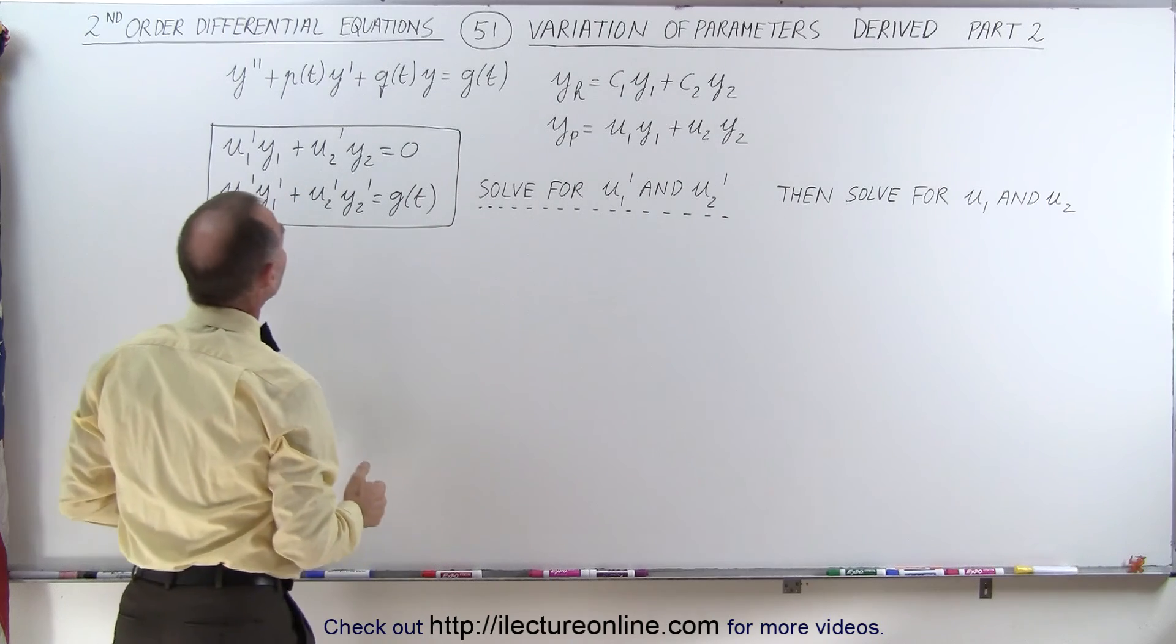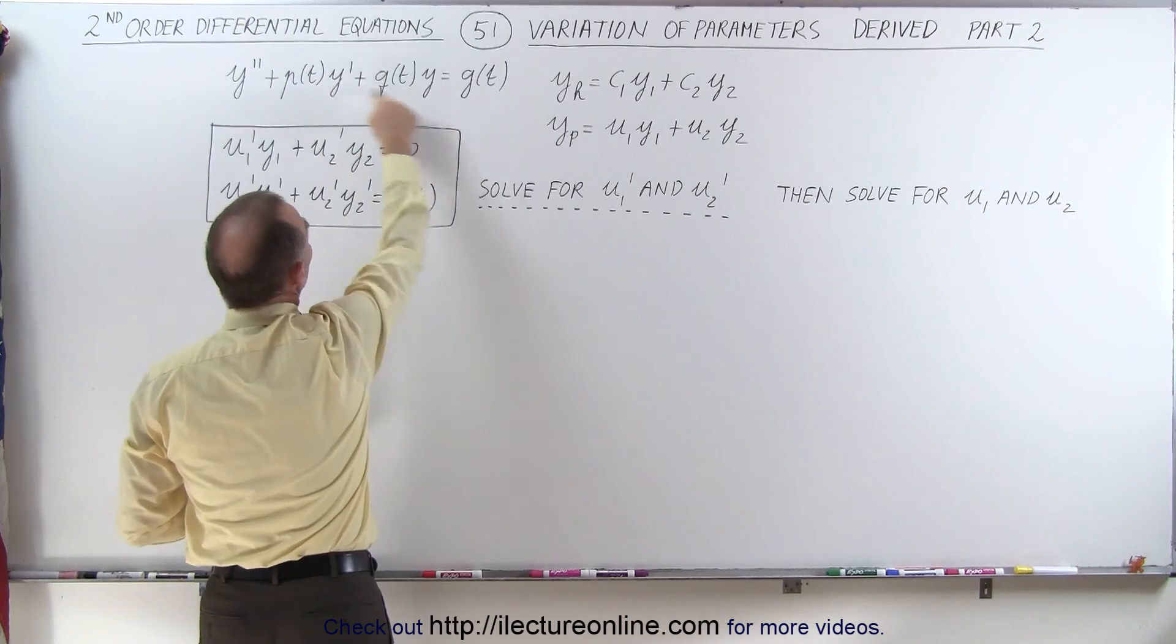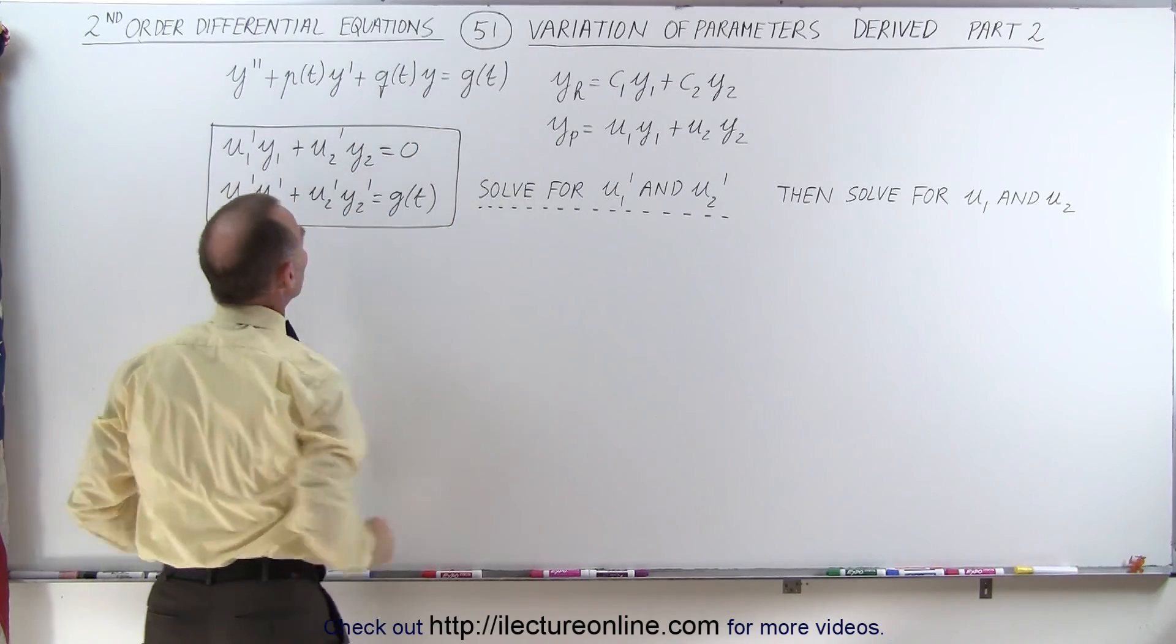Since we find y1 and y2 in the homogeneous part of the solution, the only thing left is to find u1 and u2 to find a particular solution. So what we've done is we've gone ahead and taken the first and second derivative of this, plugged into the original equation to come up with these two equations.